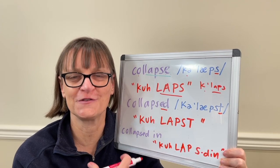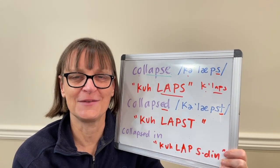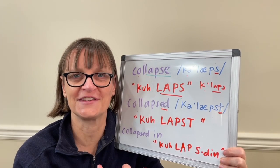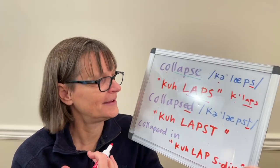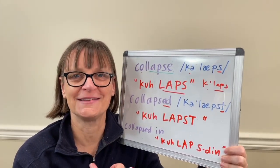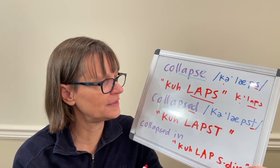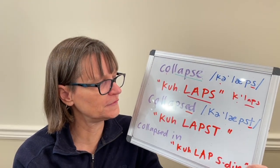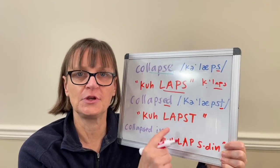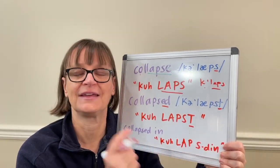If you'd like to learn more about how we say past tense and the different ways we pronounce ED, you can check out my videos for that. I also cover that in my American Accent six-week course. So a short version is: moving from collapse to collapsed, we just add the T sound.